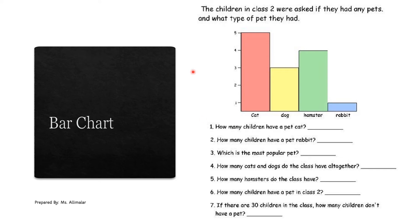Now this is a bar chart. If you look at a block diagram it has blocks, but a bar chart is like a long bar — in the middle it will be empty, with only the shaded parts at the top. The question says: the children in Class 2 were asked if they had any pets and what type of pet they had. Look at the bar chart — here is cat, dog, hamster, and rabbit. The bar for cat stops at five, so five students have a cat.